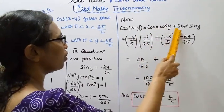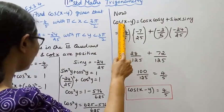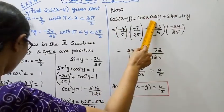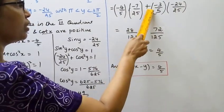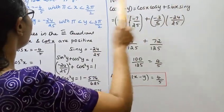Now applying the formula cos(x - y) equals cos x cos y plus sin x sin y. Cos x value is minus 4 by 5, cos y is minus 7 by 25, plus sin x value minus 3 by 5, sin y is minus 24 by 25.